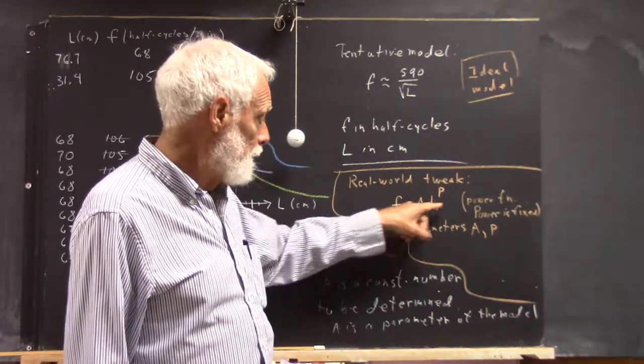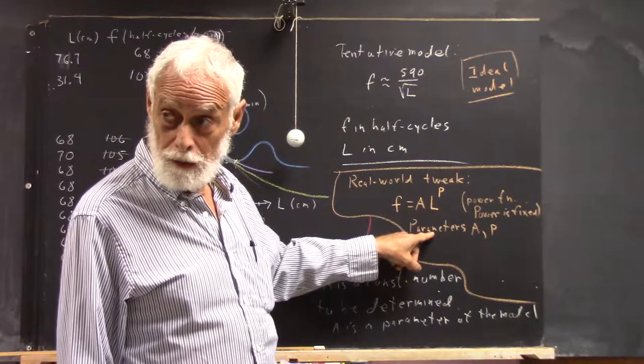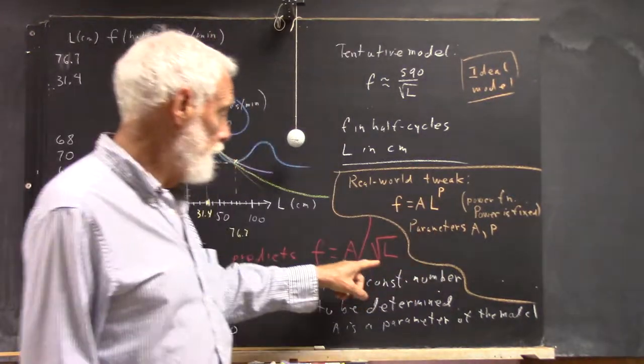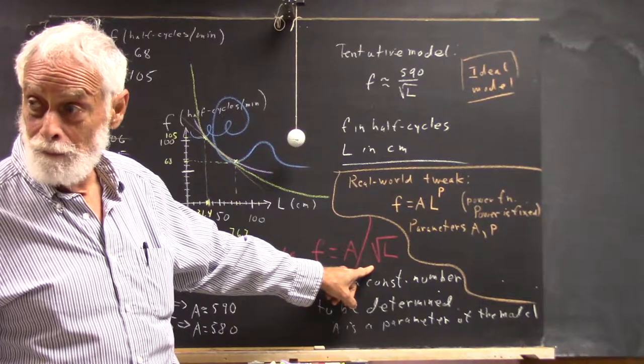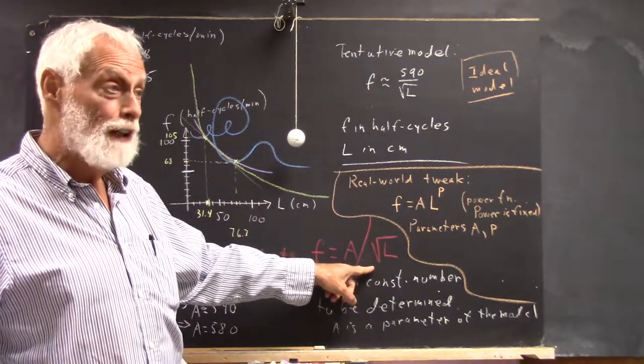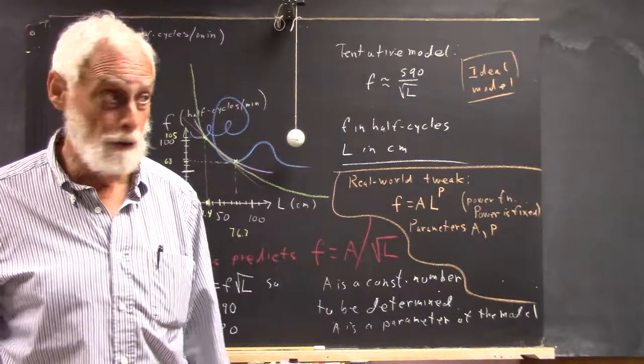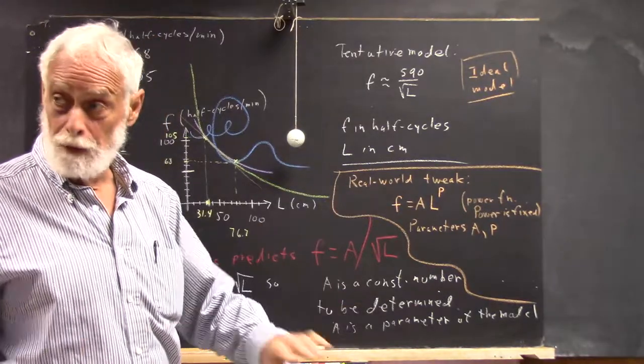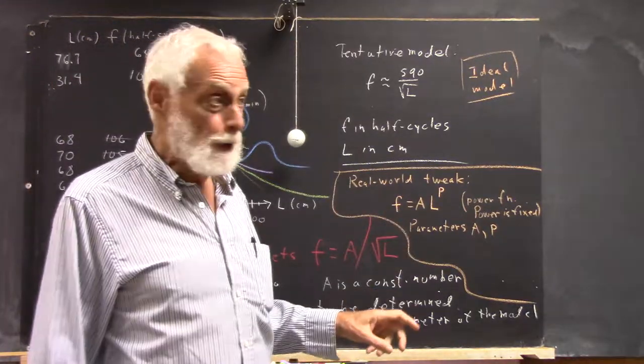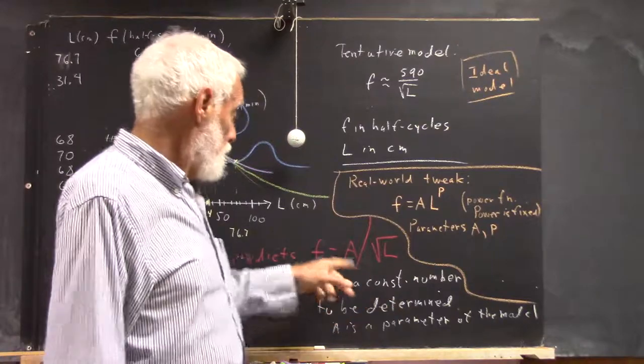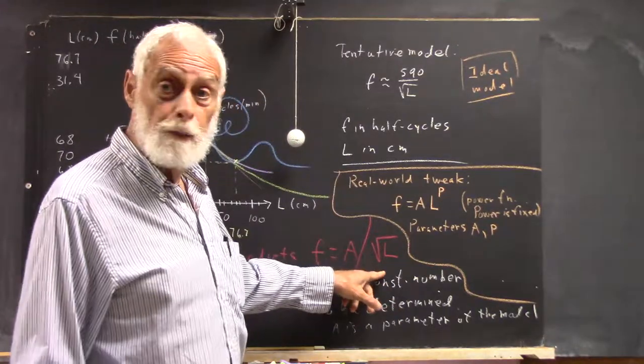And you have to find A and P in order to do this. Here, P is negative 0.5. Because the square root is the 0.5 power, the reciprocal square root is a negative 0.5 power. If you remember your laws of exponents, we'll deal with that later. So this is a power function where P is negative 0.5.